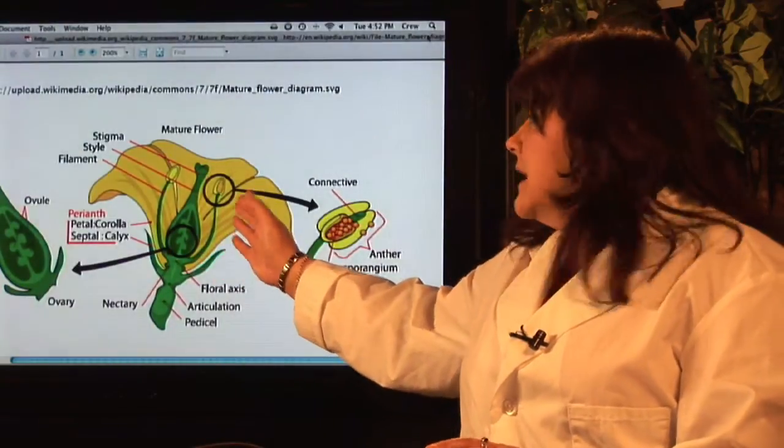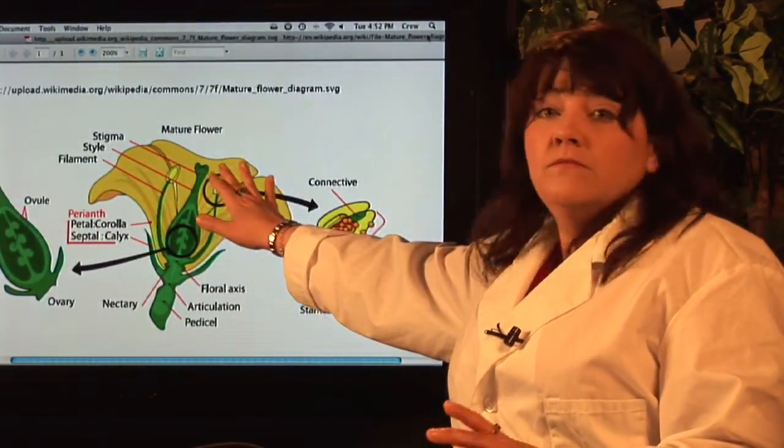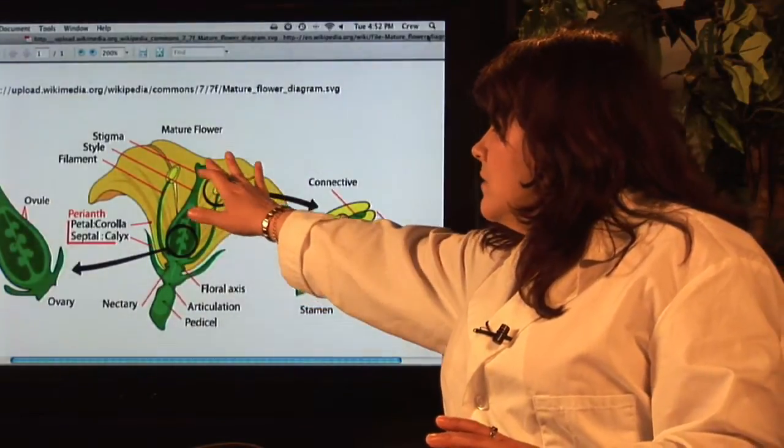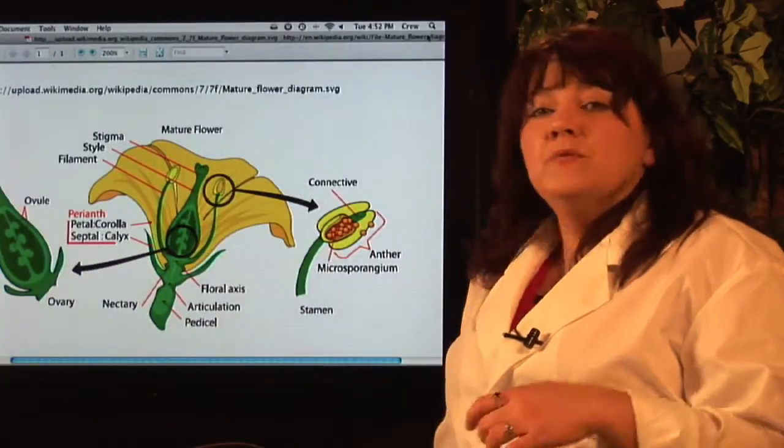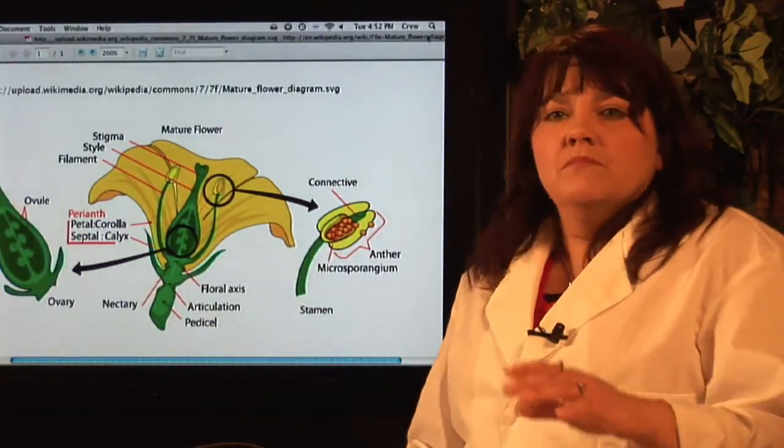Now normally what happens in a plant is that the pollen from this particular flower will fertilize the eggs that are down in the ovary, and the plant will produce replicas of itself.